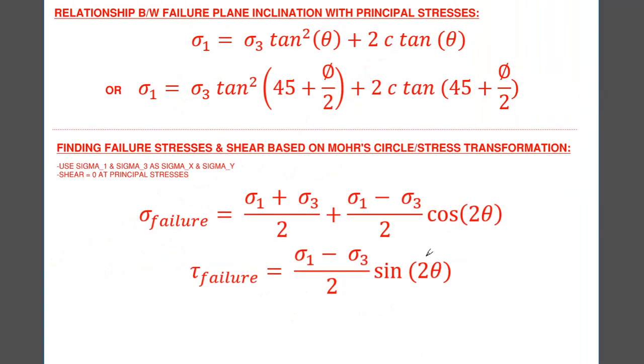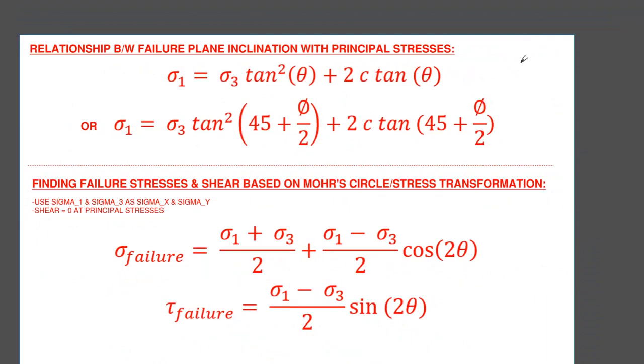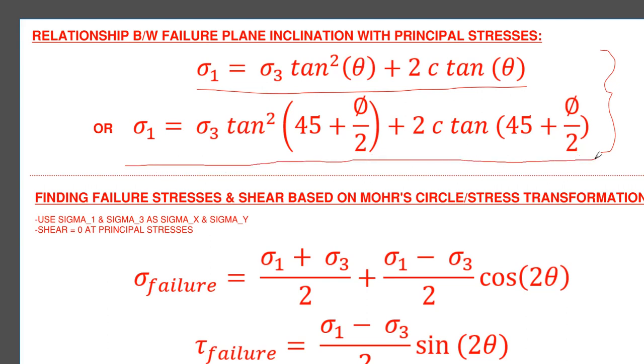But without getting into the nitty gritty details of how to derive this, this is what this relationship would look like: sigma 1 principal stress equals sigma 3 tan squared theta plus 2c tan theta. And we already know that theta is 45 plus phi over 2, so we can just replace that and this is our relationship between principal stresses and our friction angle.